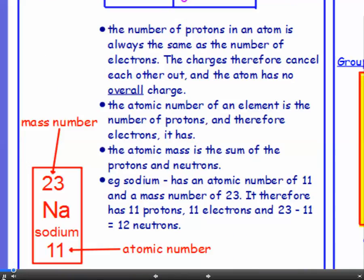Now, you can work out the number of protons, neutrons and electrons an atom has by looking at the periodic table. So let's take sodium as an example. The smaller of the two numbers, number 11 there, that's the atomic number of sodium.